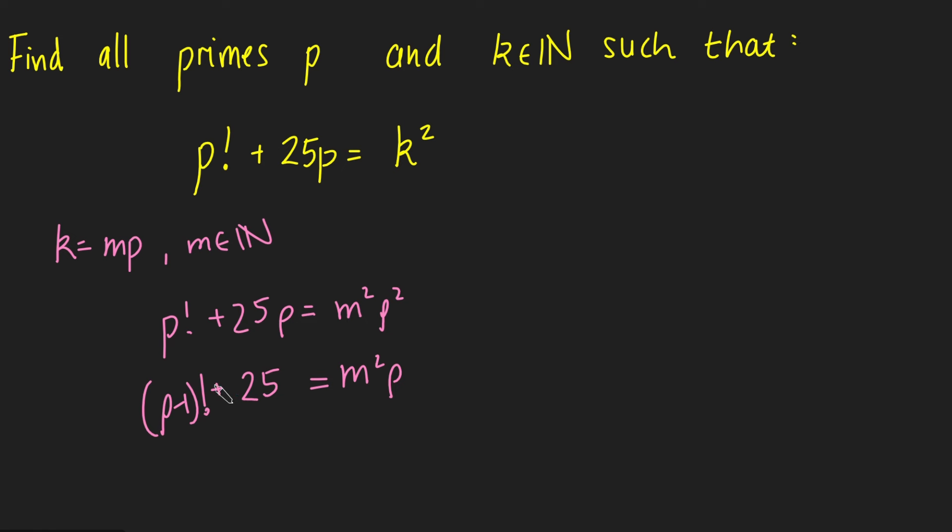Perhaps you can see where this is going. We're going to be using Wilson's theorem here, which tells us that p minus 1 factorial plus 1 is a multiple of p. So this is Wilson's theorem.